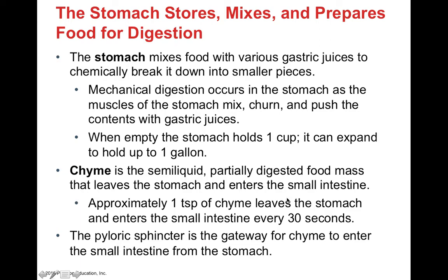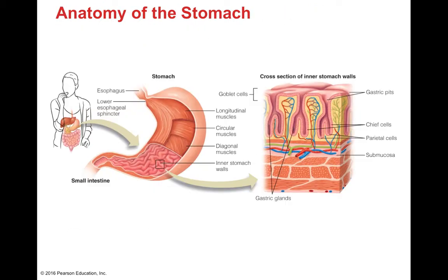Chyme leaves the stomach in small amounts: while an entire meal may have entered in about 10 minutes, only about one teaspoon leaves the stomach every 30 seconds. This is because the chyme is highly acidic and we need to restore it to normal pH before intestinal enzymes can work. Bicarbonate ions from the pancreas help raise that pH. The sphincter between the stomach and small intestines is called the pyloric sphincter, which controls the flow of chyme into the small intestines.